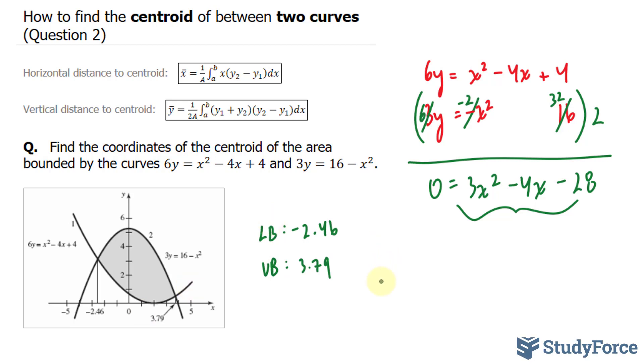Here's what I mean by that. Our area is equal to the integral between our lower bound, which is negative 2.46, and 3.79. And I mentioned earlier that this will be my y2 and this will be my y1. So I'm going to minus y2 from y1 with respect to x. So I'll call that dx.